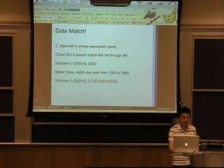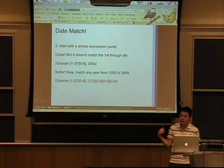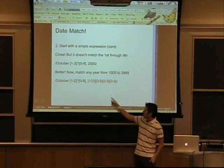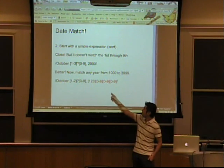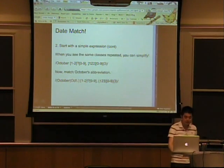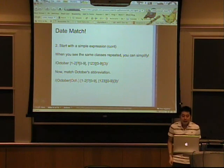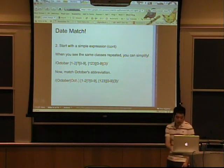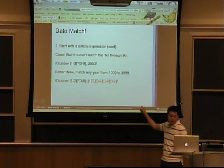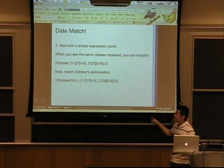Now we can expand it to match any year from 1000 to 3999, and that's here: 1 to 3 and then 0 to 9 for the rest of the digits. And then, so I'm not sure if you saw here, but we have 0 to 9 repeated many times.